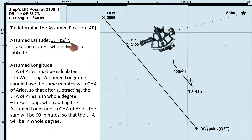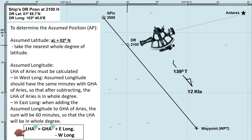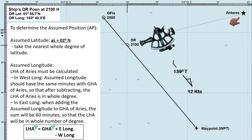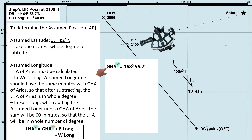For the assumed longitude, we need to calculate the local hour angle, or LHA, of Aries, and this is the formula. LHA of Aries is equal to GHA of Aries plus easterly longitude, and minus westerly longitude. At the time the sextant altitude of the star Antares was taken, the Greenwich hour angle, GHA of Aries, was 168 degrees 56.2 minutes.